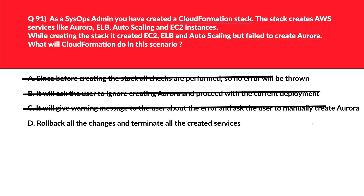Let's look at option D. It says roll back all the changes and terminate all created services. Rollback looks good. Always remember that when it comes to deploying a CloudFormation stack, it's always all or nothing. Either all AWS resources listed in the CloudFormation stack will be created, or nothing will get created. This looks good and we'll log D as the correct answer.